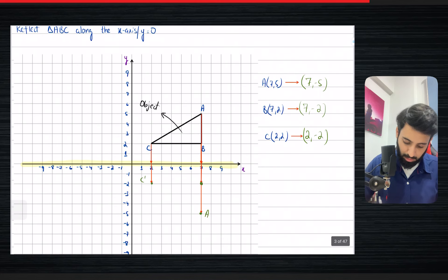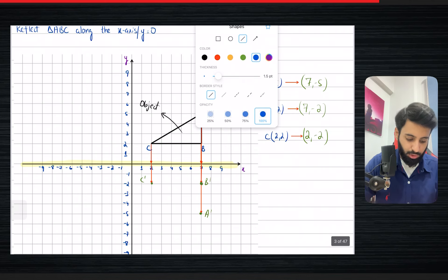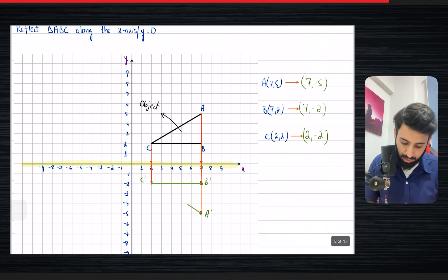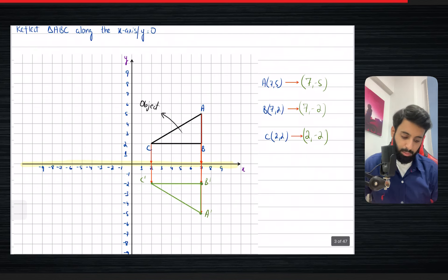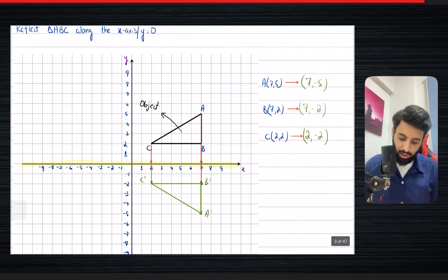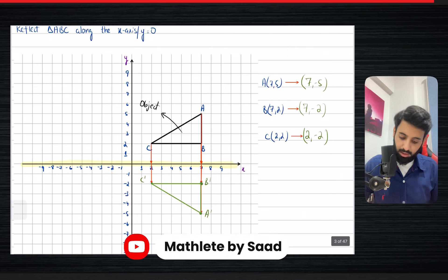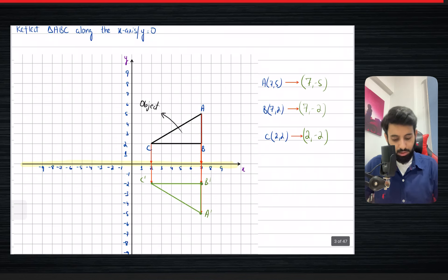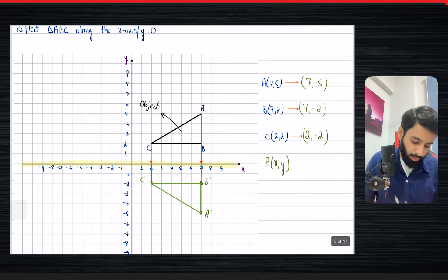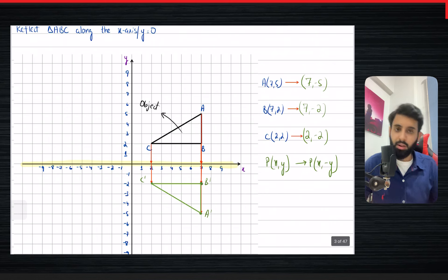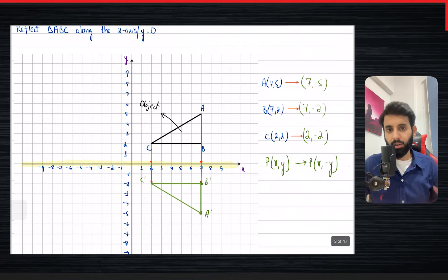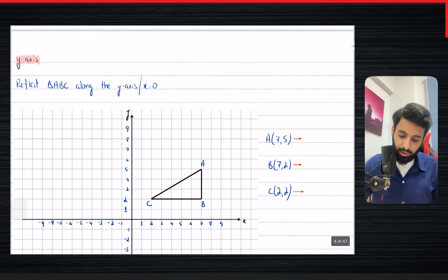Let's label A prime, B prime, and C prime, and join them with straight lines. The pattern is that while the x coordinate remains the same, the sign of the y coordinate changes — negative becomes positive, positive becomes negative. So the general rule is: if you have a point x comma y and reflect it along the x-axis (y equals zero), all you do is change the sign of the y coordinate. That's the benefit of knowing the standard rule.